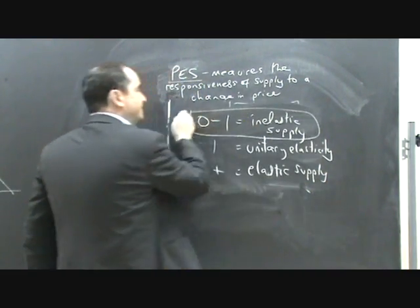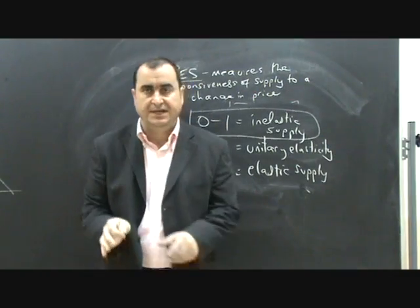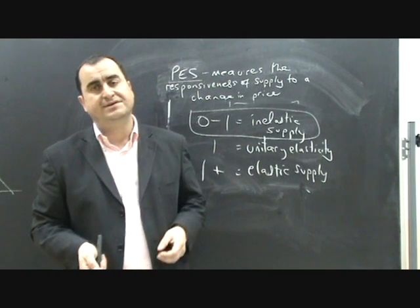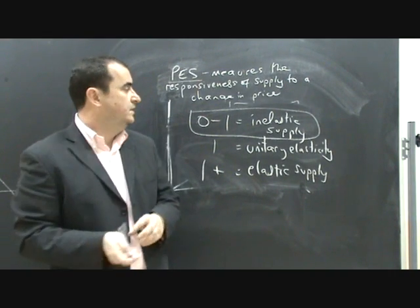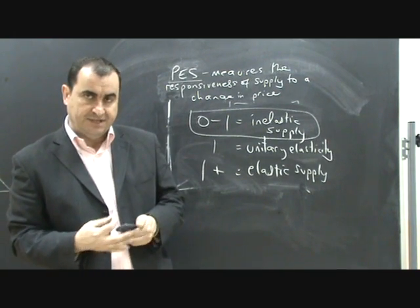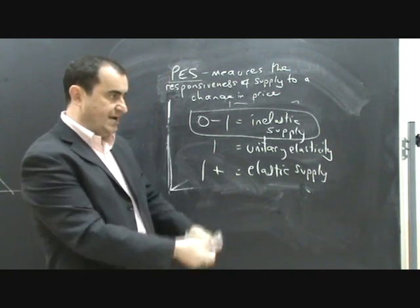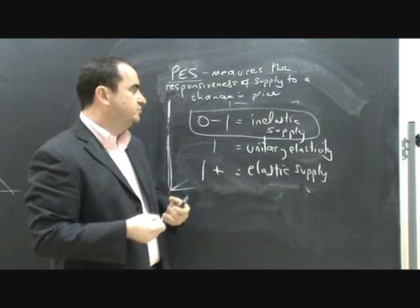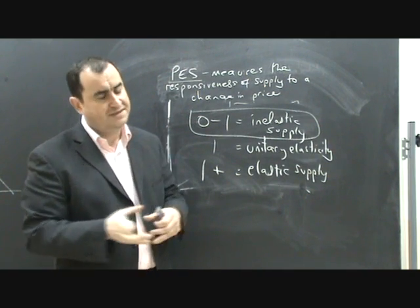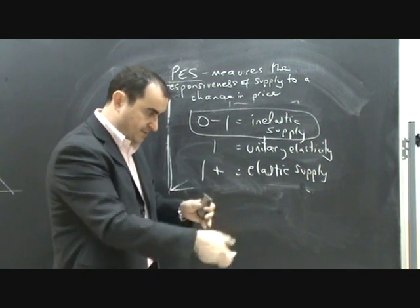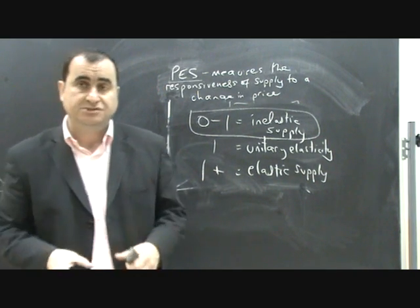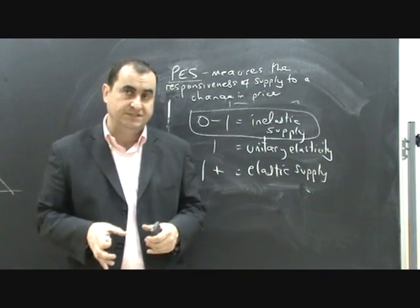What goods are likely to have inelastic supply? Typically agricultural goods and commodities that have to be dug out of the ground. Metals or oil will probably have inelastic supply because it's not easy for the extractors of metals or the extractors of oil to react when there is a price change. They can't quickly increase their supply. They may have some spare capacity. They may be able to pump out a bit quicker the oil but it's not easy for them to speed up or slow down the extraction speed of the commodity that they extract.